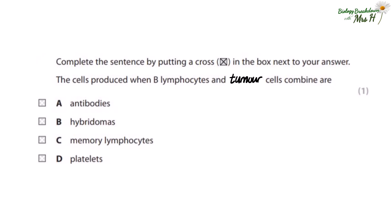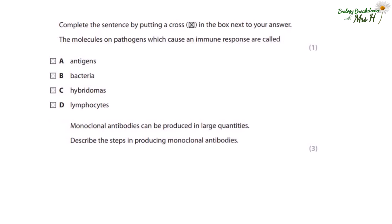Complete the sentence by putting a cross in the box next to your answer. The cells produced when B lymphocytes and tumour cells combine are: A) antibodies, B) hybridomas, C) memory lymphocytes, or D) platelets. The answer is definitely B, hybridomas. The molecules on pathogens which cause an immune response are called: A) antigens, B) bacteria, C) hybridomas, or D) lymphocytes. That is definitely A, antigens.